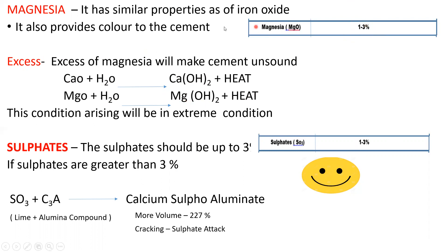That is why magnesia content is limited to 1 to 3 percent. However, whatever magnesium hydroxide forms will only happen at very high temperature and extreme conditions. In normal cases this reaction won't occur, unlike calcium hydroxide which reacts with water without needing extreme conditions — the moment lime is excess it reacts with water, whereas magnesia requires extreme conditions.